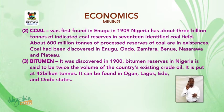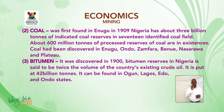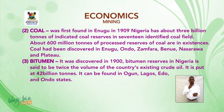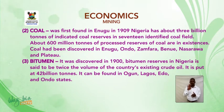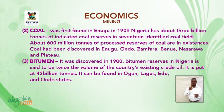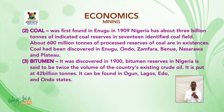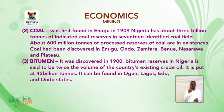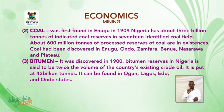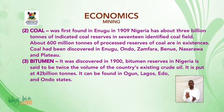Coal has been discovered in Enugu, Ondo, Zamfara, Benue, Nasarawa and Plateau states. Bitumen — it was discovered in 1900. Bitumen reserves in Nigeria are said to be twice the volume of the country's existing crude oil, put at 42 billion tons. It can be found in Ogun, Lagos, Edo and Ondo states.